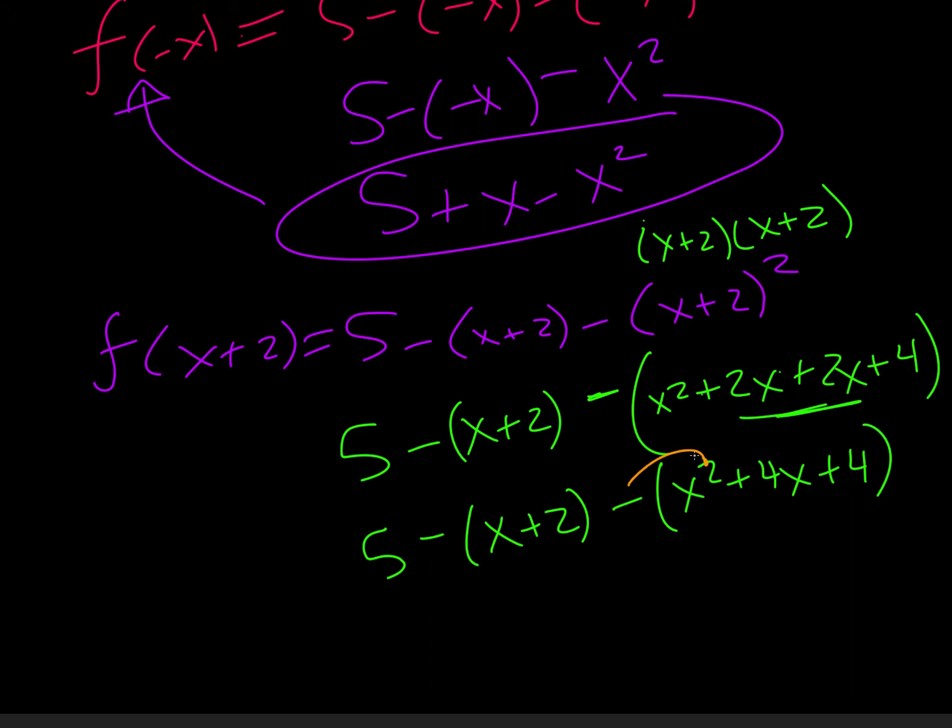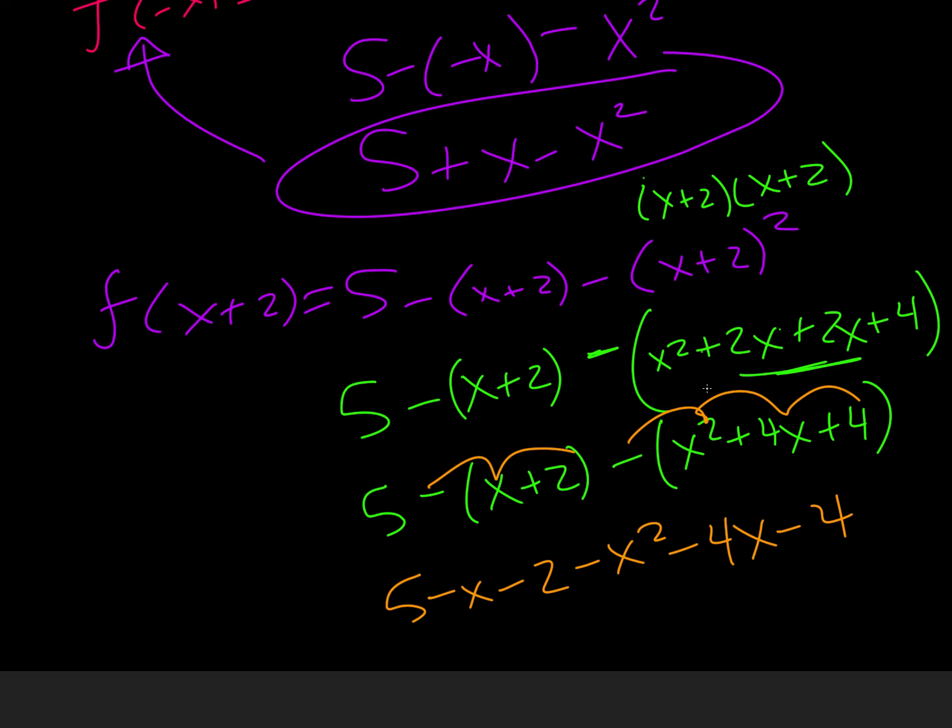Now I'm going to distribute this negative, and I'm going to distribute this negative. So 5 minus x minus 2 minus x squared minus 4x minus 4. And then combine like terms. So we got these two things. So that's going to be a 3. Oh, whoops. And then this negative 4. So that's actually negative 1.